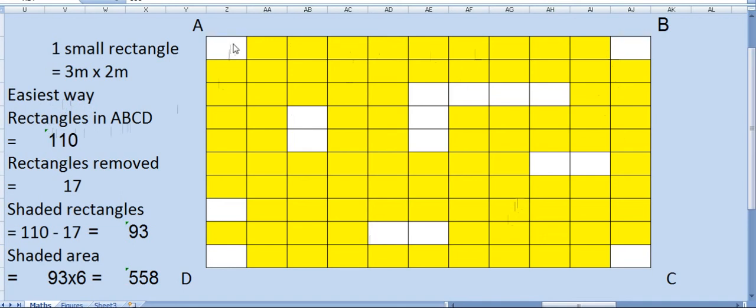How many rectangles are there? Smaller ones. This is 11 and this is 10. So 11 multiplied by 10 is 110 total small rectangles.